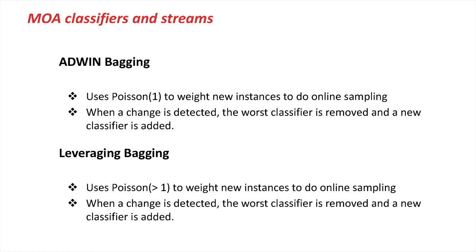In a number of experiments we also found that we can improve on that by playing with the parameters. For the Poisson distribution, if we use a mean larger than 1 — like 2, or even up to 6 — we find that across a large range of benchmark data sets in stream mining we get better results. We've called this Leverage Bagging. Again it's coupled with ADWIN for explicit change detection: if things go bad you remove the worst classifier and replace it with a new one.